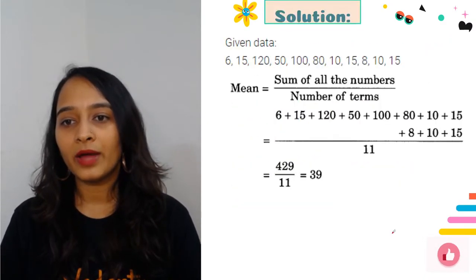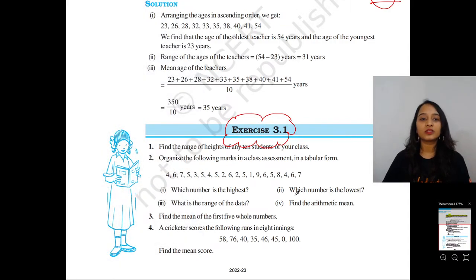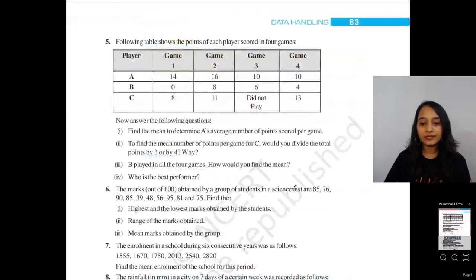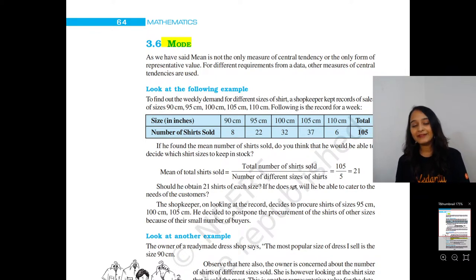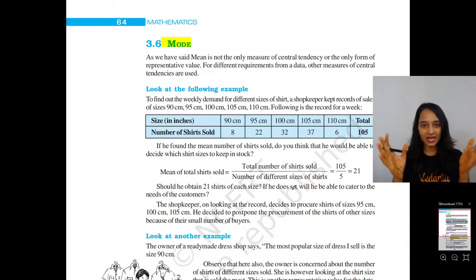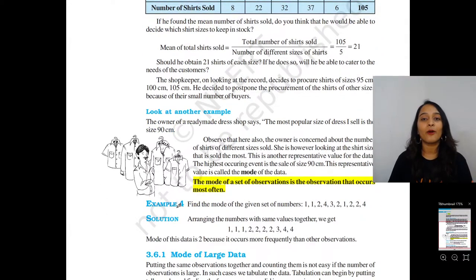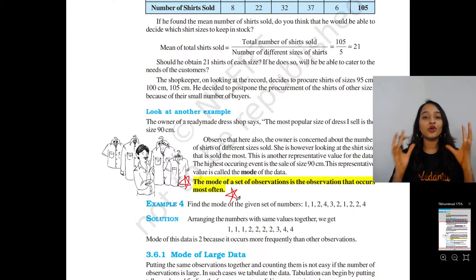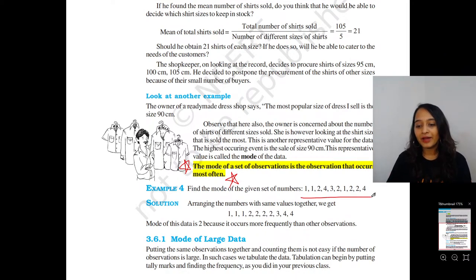Next we are going to talk about mode, median, and more. The mode of a set of observations is the observation that occurs most often - the observation that occurs the maximum number of times. For example, with data arranged in increasing order: it's always good practice to arrange data in ascending order when finding mode or median. Once you arrange the data in ascending order you will not make a mistake. Here, 2 has repeated itself the maximum number of times - 4 times - so the mode of the data is 2.